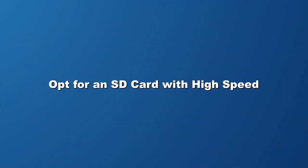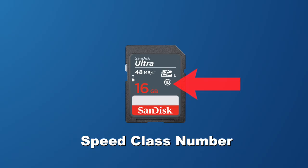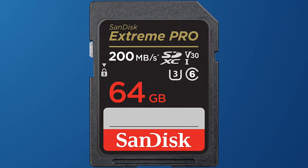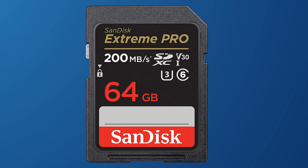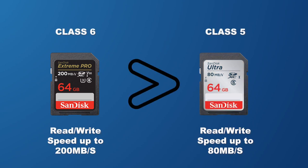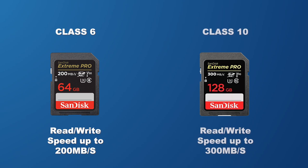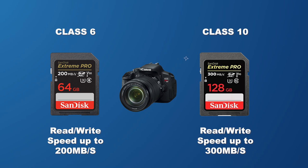Opt for an SD card with high speed. The read and write speeds of an SD card determine its class. More digits in the class number indicate faster read and write times, and hence higher quality. A camera's read and write speed is the rate at which it can store and access data. For example, the read and write speed of a class 6 SD card is higher than that of a class 5 SD card. Because of this, nothing less than a class 6 SD card — but preferably a good quality class 10 card — should be used in high-end cameras like Canon.